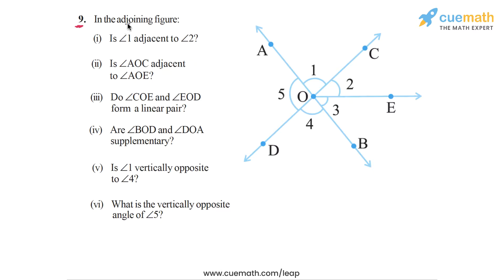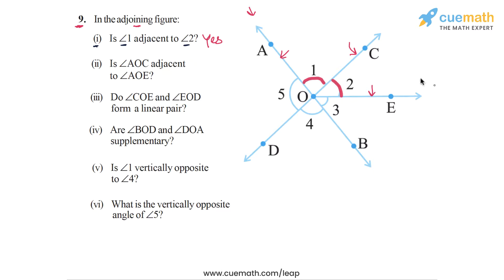In question nine of this exercise, we have to observe the adjoining figure and answer all the questions one by one. The first question is: is angle one adjacent to angle two? Angle one is this angle here and angle two is this angle here. These two angles have common arm OC, and their non-common arms OA and OE are on opposite sides of OC. So angle one and angle two are adjacent angles — the answer for part one is yes.